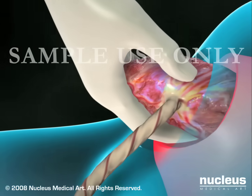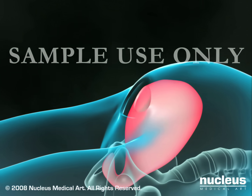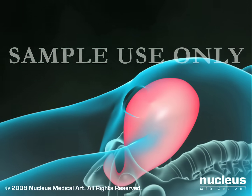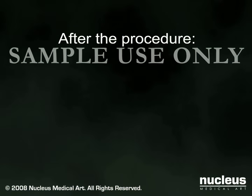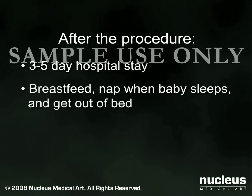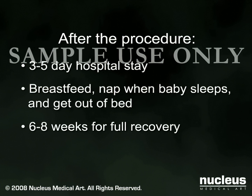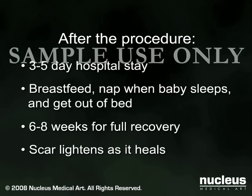Gently remove the placenta and tightly suture your uterus and abdomen. This typically takes about 45 minutes. The hospital stay after a cesarean section is usually 3 to 5 days. During this time, you will be encouraged to breastfeed, nap when the baby sleeps, and get out of bed often. While most patients are able to take care of their new baby soon after the procedure, full recovery may take 6 to 8 weeks. Your scar will lighten as it heals.